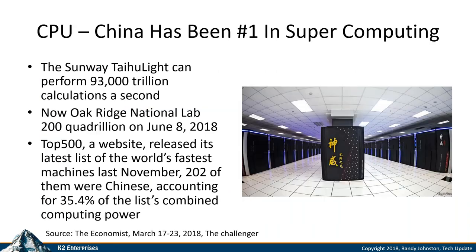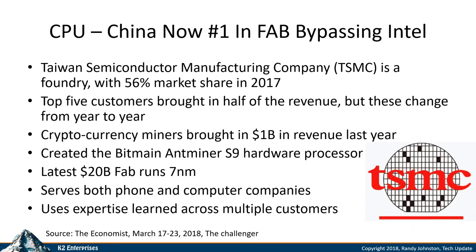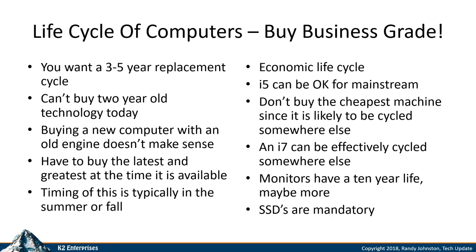On June 8th, Oak Ridge National Lab became number one in supercomputing, but China has been number one most of last year. China currently has the largest fabrication plant, bypassing Intel. Most of you on the webinar own products from TSMC — that's if you have an iPhone, Android phone, Samsung, or Google Pixel. This manufacturing company has seven-nanometer fabrication, and Intel can't make that work. This is very much a competitive technology threat.